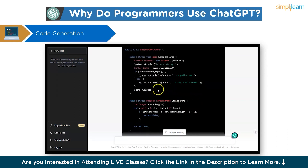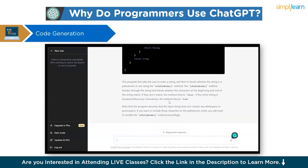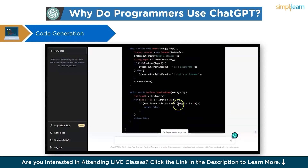As you can see, it has generated the program. It used a class name called PalindromeChecker and a method name called isPalindrome. It also provides an explanation of the program, explaining why isPalindrome is used as a method and detailing the for loop, if condition, and so on.